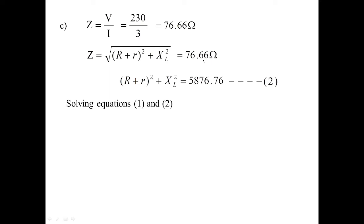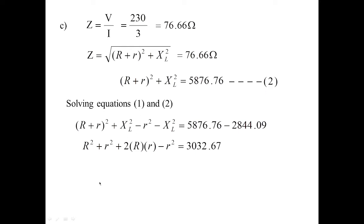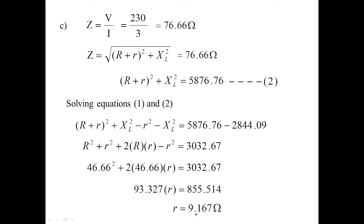Solving equations 1 and 2 together: since R is known as 46.66 ohms, the XL terms cancel out. Expanding using the (a + b)² formula, the like terms cancel and we are left with R² + 2·R·r, where capital R is 46.66. Solving gives the internal resistance of the coil, small r, as 9.167 ohms. This is equation 3.